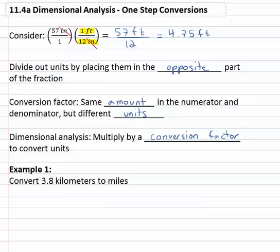So if we're asked to convert 3.8 kilometers into miles, we've got 3.8 kilometers, we'll make it into a fraction by putting it over 1. And then we'll set up what's called a conversion factor, same amount in the numerator and denominator with different units.